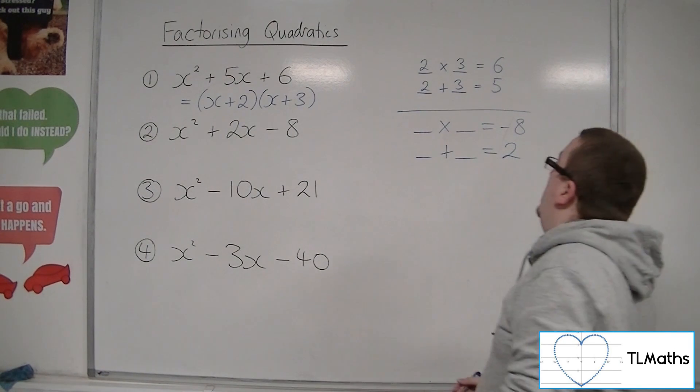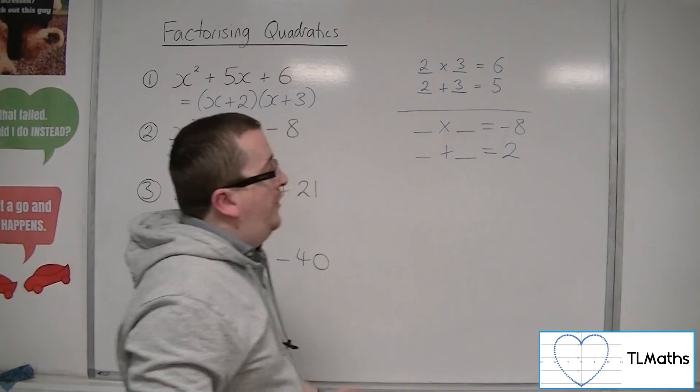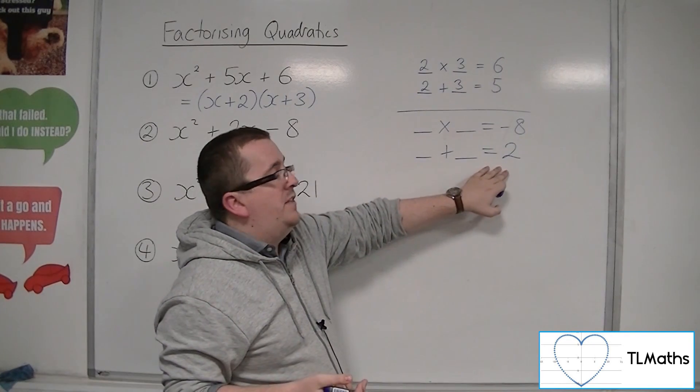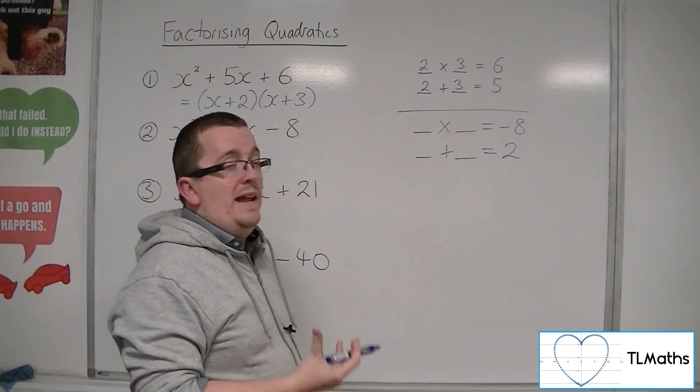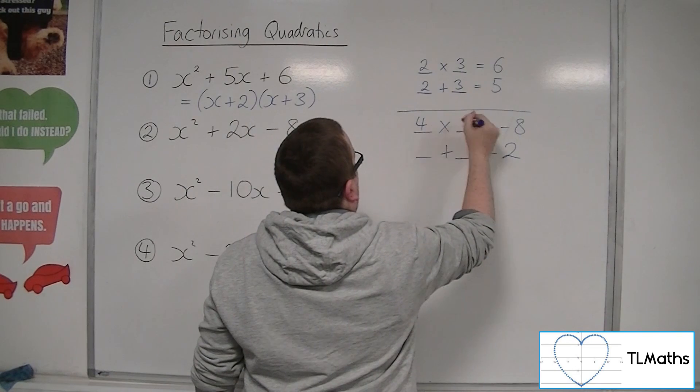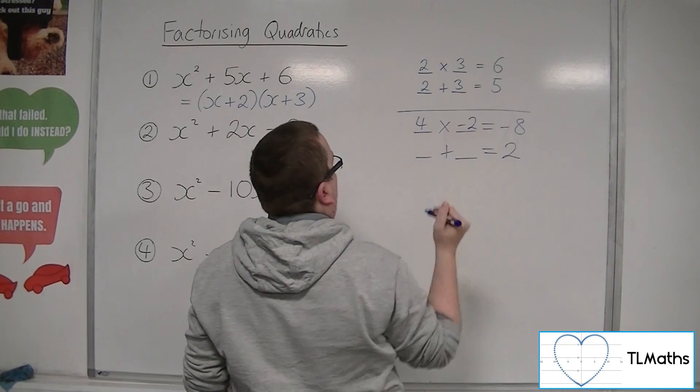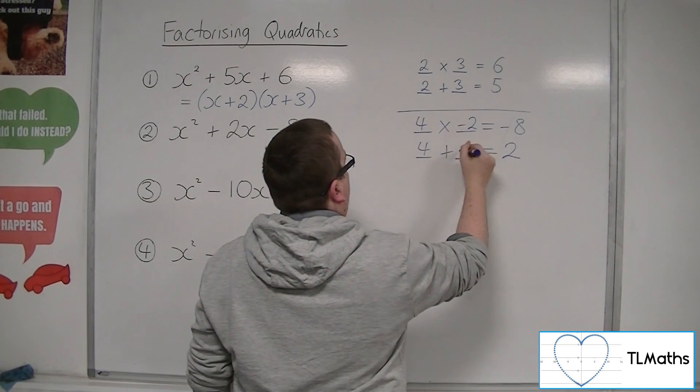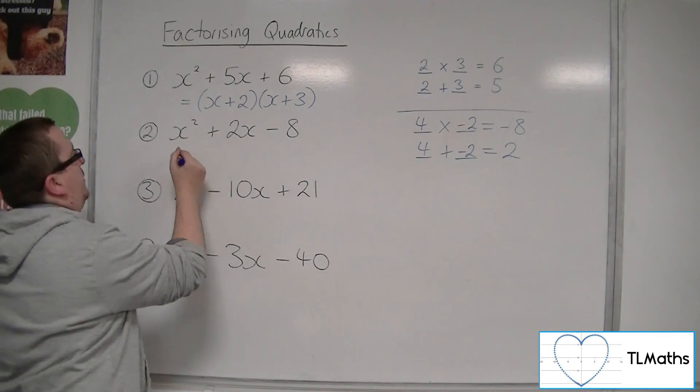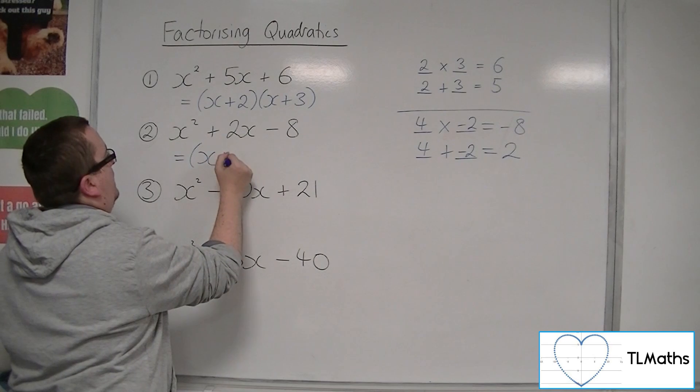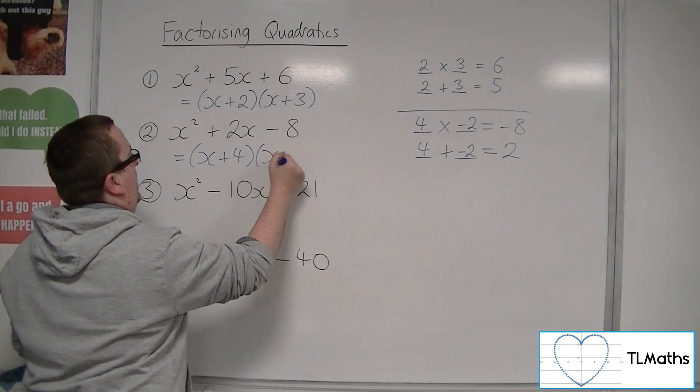One example would be minus 4 and 2, but they don't add together to make 2, they add together to make minus 2. So if we had 4 and minus 2, then they multiply to make minus 8 and add together to make 2. So 4 and minus 2 works. So we'd have x plus 4 and x minus 2.